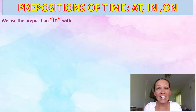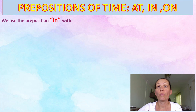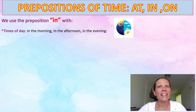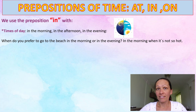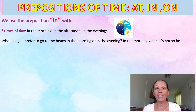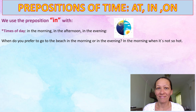Let's start with the preposition 'in'. We use the preposition 'in' when we talk about times of day. For example: in the morning, in the afternoon, in the evening. For example: when do you prefer to go to the beach? In the morning or in the evening? In the morning, when it's not so hot.